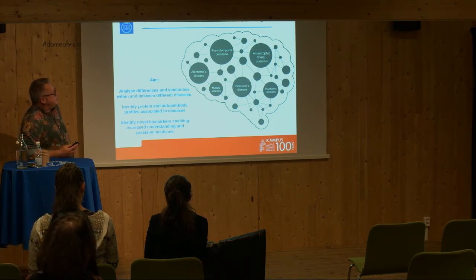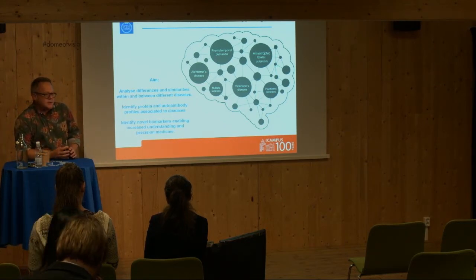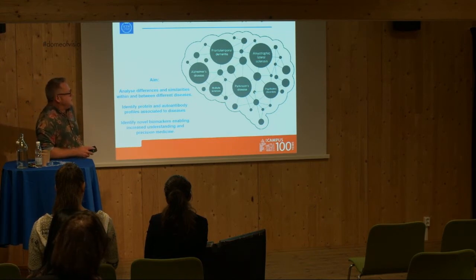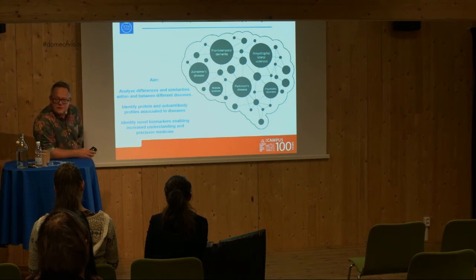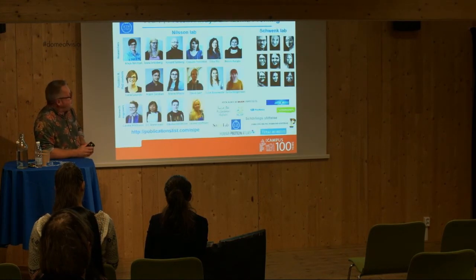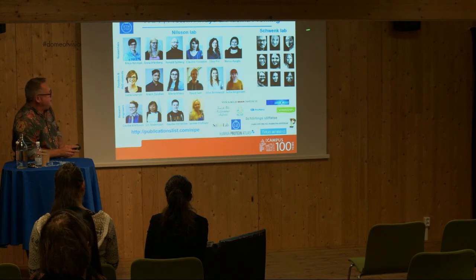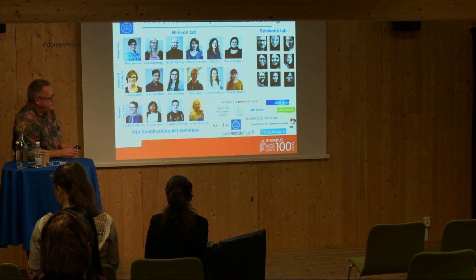To summarize neuroproteomics: for us it's a matter of being able to analyze many proteins or autoantibodies in many samples, and doing that across different diseases — Alzheimer, Parkinson, dementia, ALS, multiple sclerosis, etc. We can try to identify similarities and differences not only within diseases but also between diseases, utilizing affinity reagents, array technologies, and well-characterized samples, and then trying to make biology from these findings. Finally, I want to acknowledge all the people doing the work in the group — we call it PUP, Protein Arrays and Plasma Profiling — with Nilsson Lab and the Schwenk Lab working closely together, and all the funding resources enabling this work. Thank you for your attention.